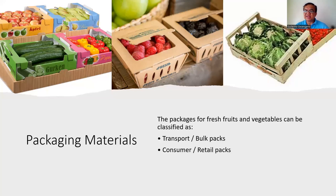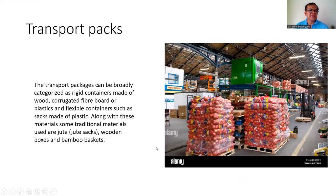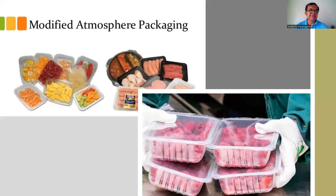This is the last topic: packaging materials for transport and consumer use. These include corrugated fiberboard or plastic and flexible containers such as sacks made of plastics. Traditional materials used include jute sacks, wooden boxes, and bamboo baskets. Modified Atmosphere Packaging, or MAP, is now popular — you can see it in supermarkets. Even tofu now has good MAP packaging. However, MAP requires specialized machines.